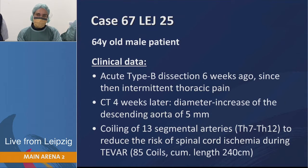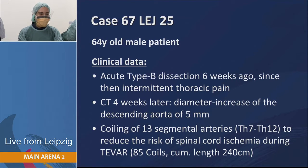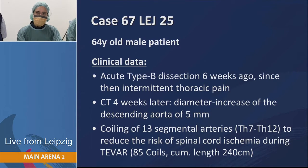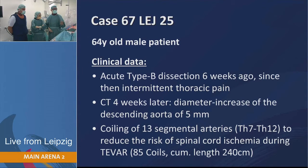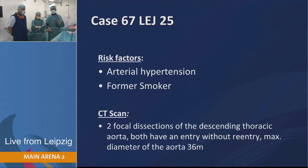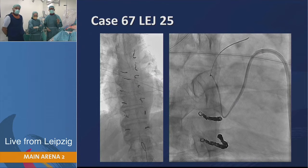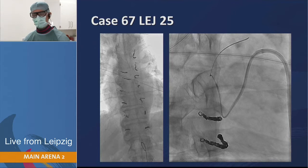We were concerned about spinal cord ischemia. That's why we decided to treat this patient in a staged manner, and for staging we decided to coil the segmental arteries. We have already coiled 13 segmental arteries between the level of TH7 down to TH12, performed in three sessions, with approximately four to five segmental arteries per session. Currently, a minimum of one week between sessions is what we want to see to really avoid any problems in terms of spinal ischemia.